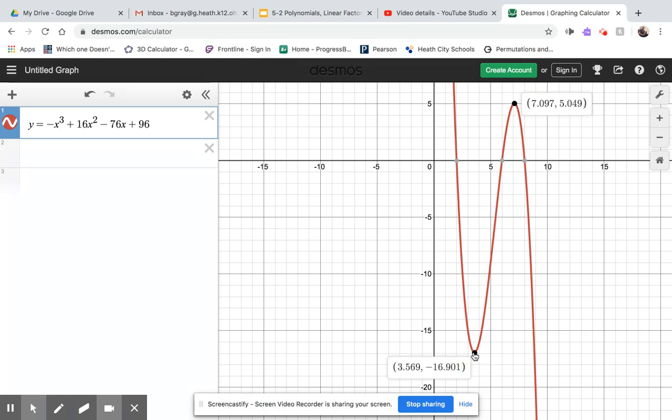Same thing. Go ahead and click on the minimum as well, and you can see the coordinates of it. There's 3.569 something and negative 16.901. That should look very similar to what you saw on the last video, if you watched that.